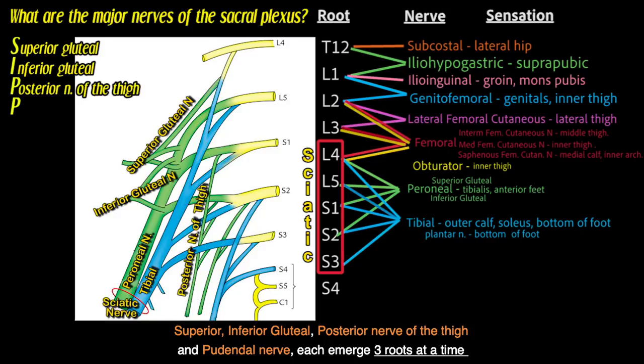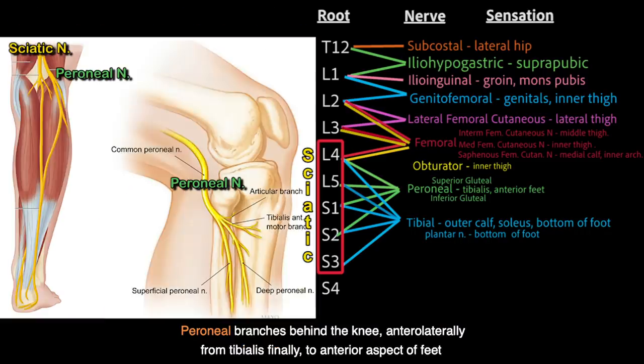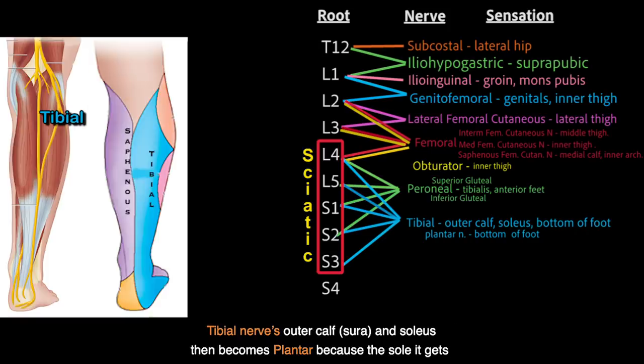Sit for the lumbosacral branches: superior gluteal, inferior gluteal, posterior cutaneous nerve of the thigh, and pudendal nerve — each emerging from nerve roots at a time. Peroneal branches behind the knee, anterolaterally from tibialis finally — the anterior aspect of the feet.